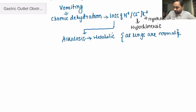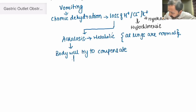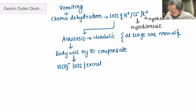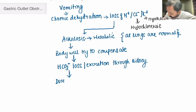Because of this alkalosis, the body tries to compensate or combat the situation. How does this compensation occur? It occurs in the form of excretion of bicarbonate through the kidney. Now, as this bicarbonate is being lost, sodium ions are also lost along with it.